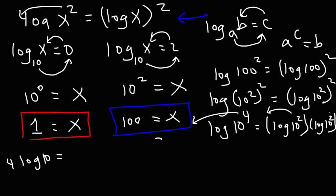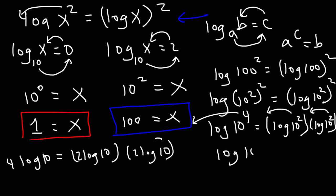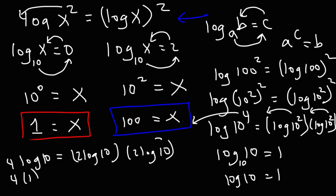On the right, we move the 2 to the front of each log, giving us 2 log 10 times 2 log 10. Now, log 10 with base 10: 10 raised to what power equals 10? That's 10 to the first, so log 10 equals 1. Since log 10 is 1, we have 4 times 1 on the left, which equals 4. On the right, 2 times 1 times 2 times 1 equals 4. Both sides equal 4, confirming our answers are correct.